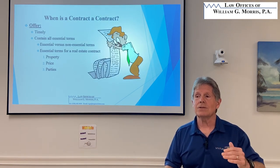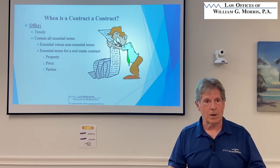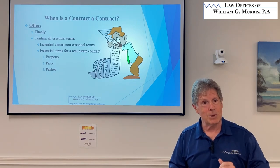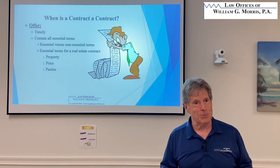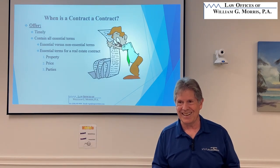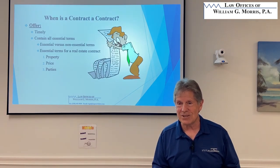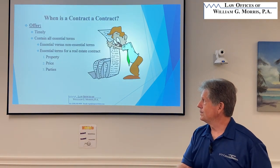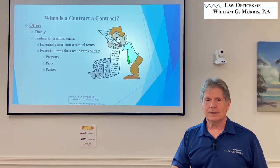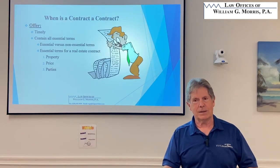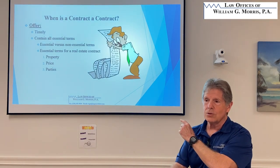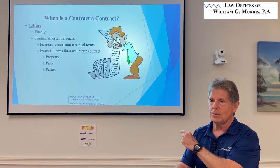Everybody makes mistakes. If you transpose numbers on a phone number, that just requires one digit — so be careful. And of course, price. Most of the time we get that right — we know what the price is, but we've got to have agreement on it. Those are three essential terms of the contract: identity of the parties, description of the property, and price.